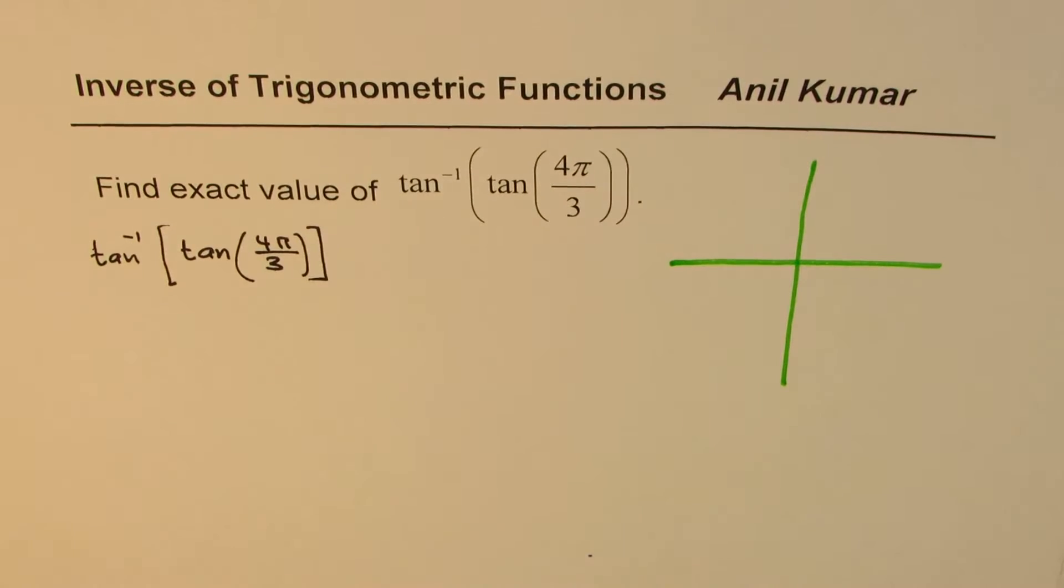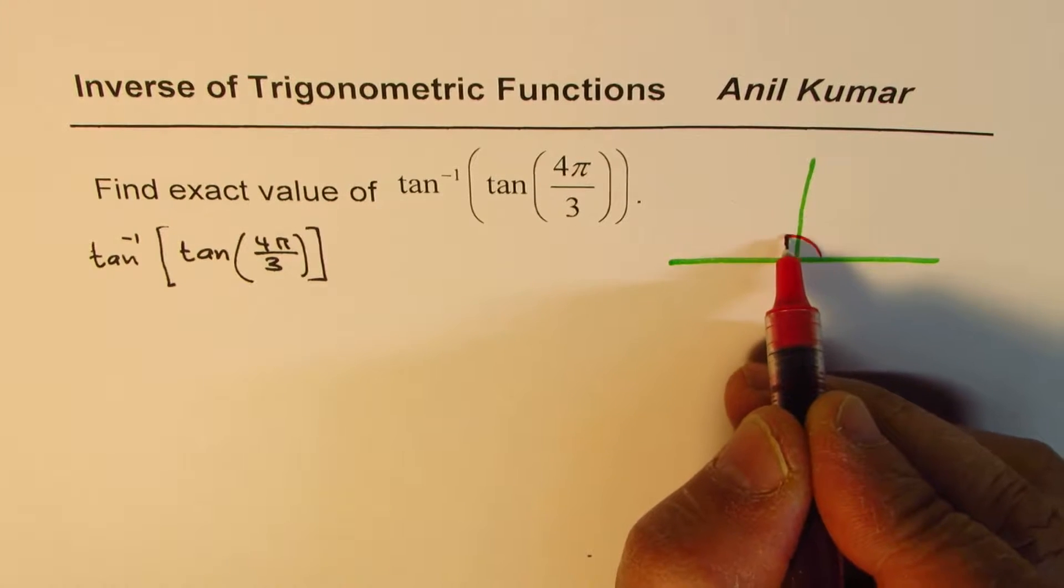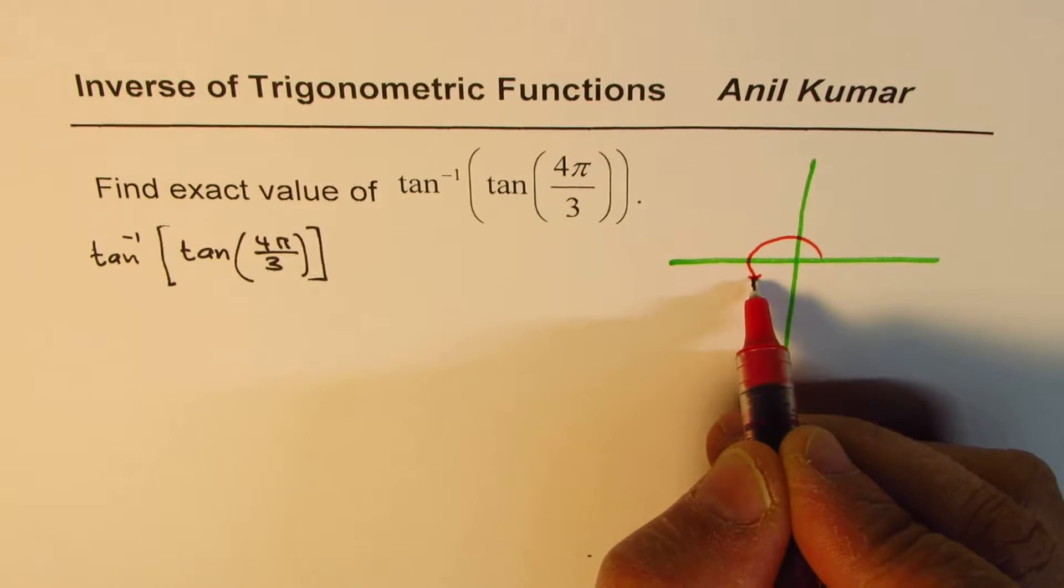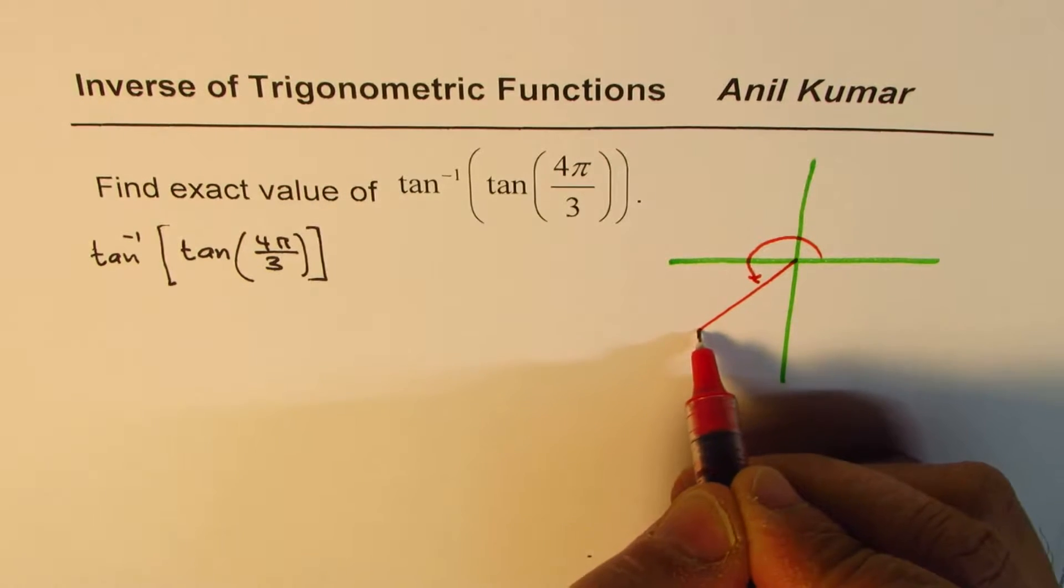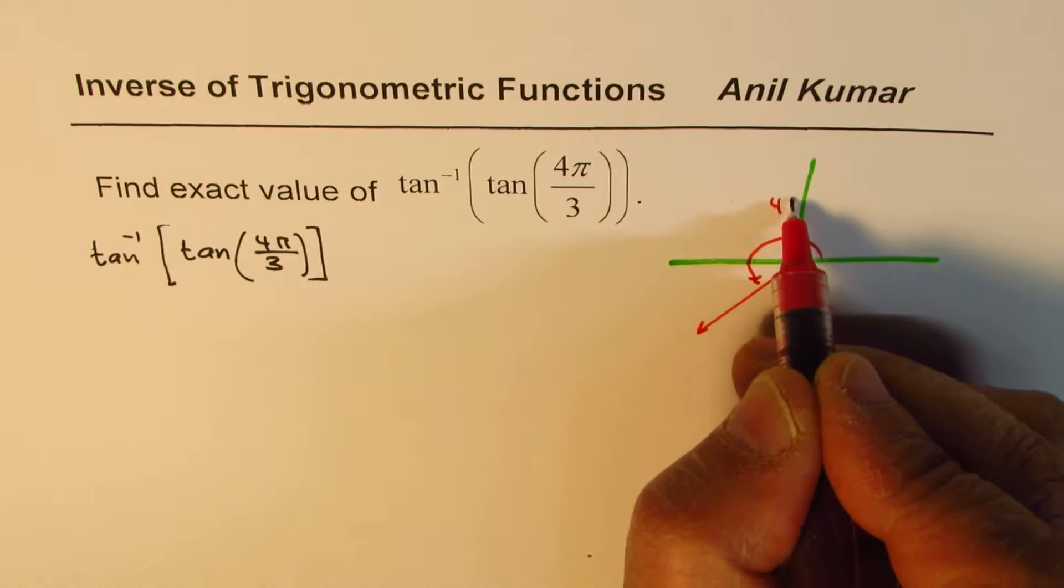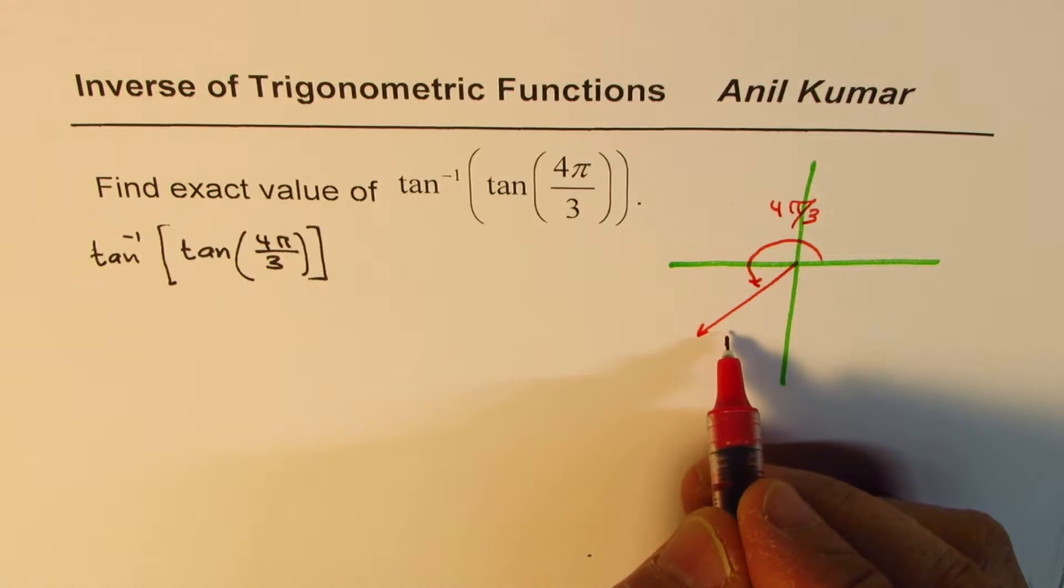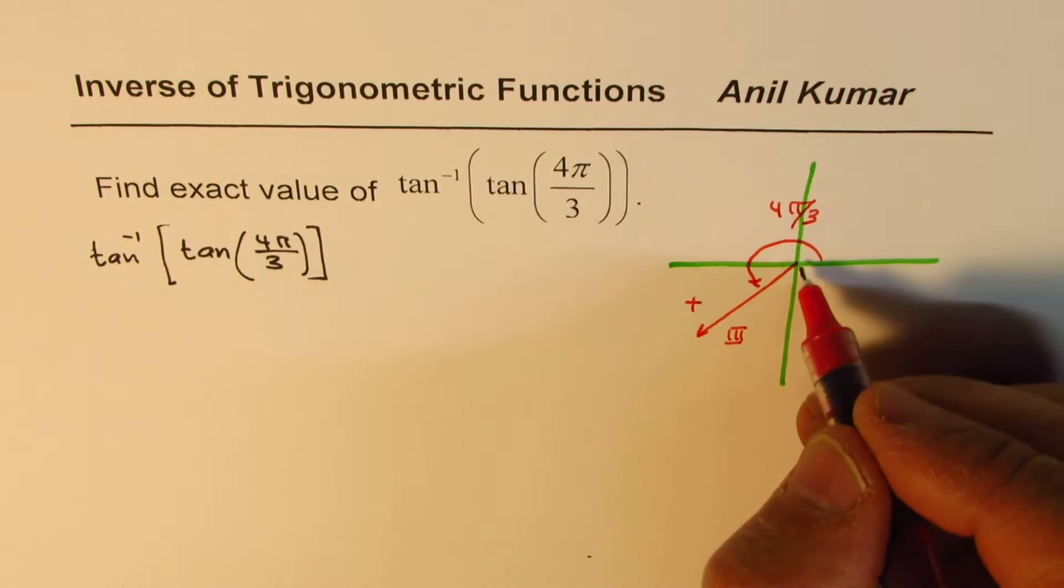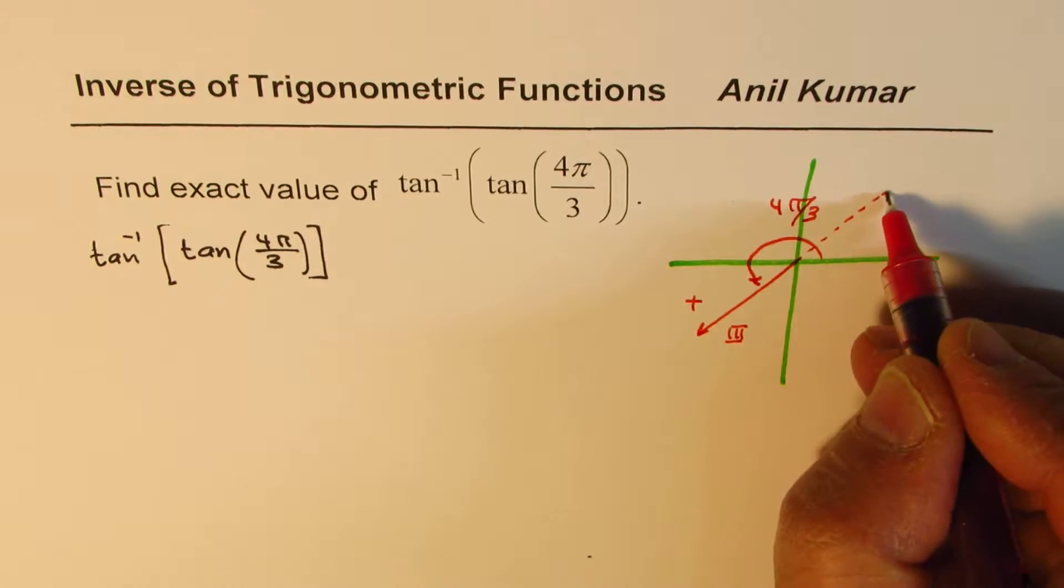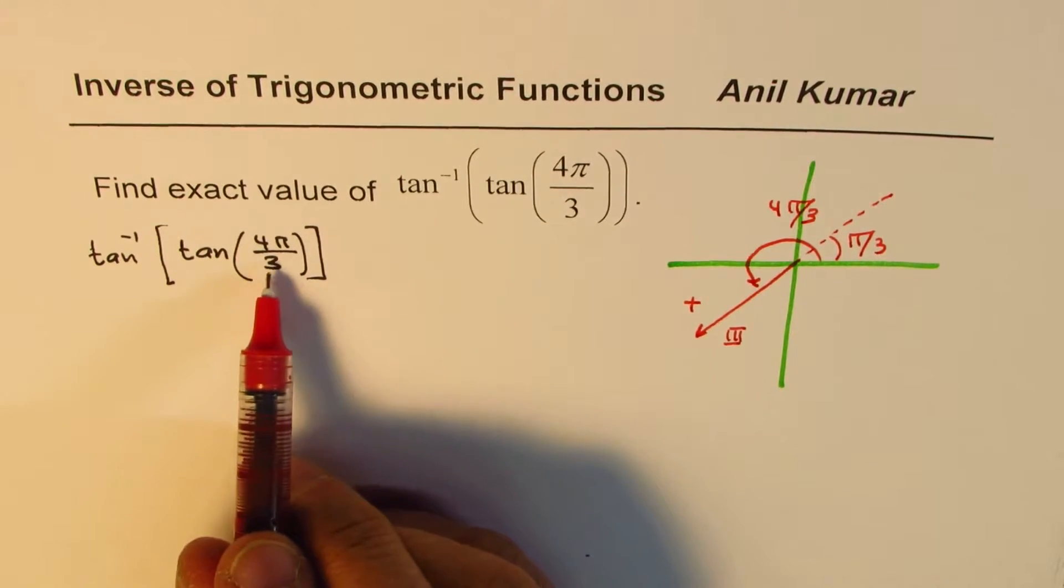If that is the Cartesian plane, then 4π by 3 means we're talking about an angle which is somewhere here. This is 3π by 3 and then that could be 4π by 3. So the idea here is that we are in quadrant 3, and in quadrant 3 tan is positive. It has the acute angle which is π by 3. So it has a positive value.